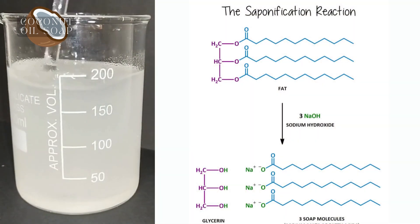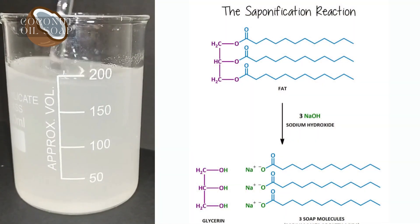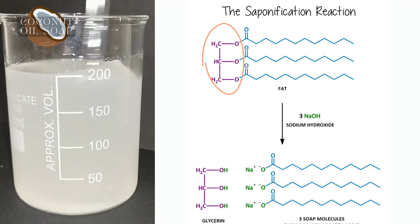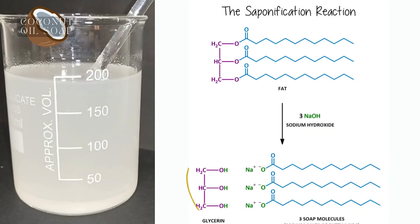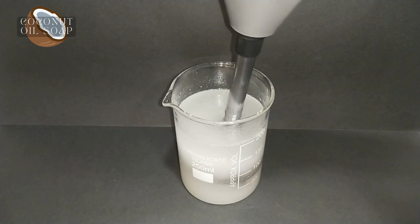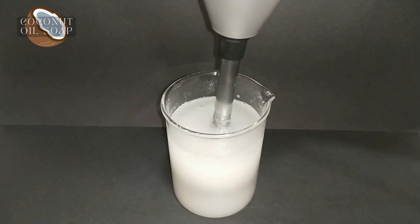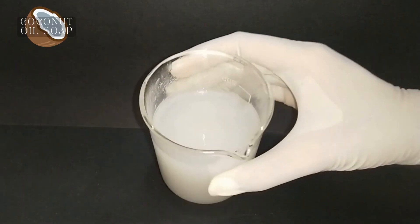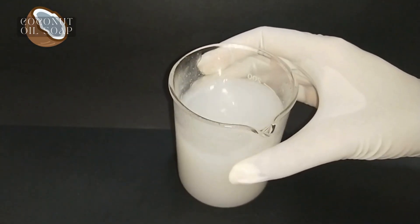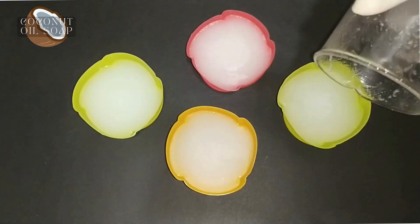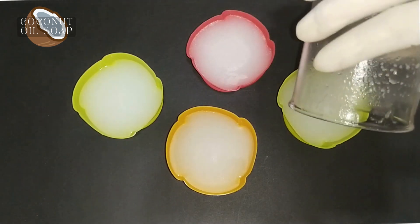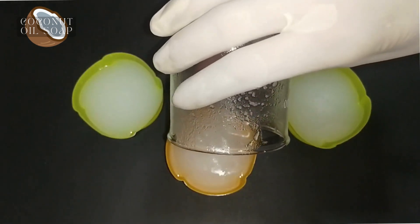And this reaction is called as saponification reaction in which ester bond and glycerides of oil are being hydrolyzed and forming salted fatty acid and glycerol. So after 5 to 10 minutes your suspension will look something like this. Then pour this suspension into mold of your choice and let it be set for 24 hours.